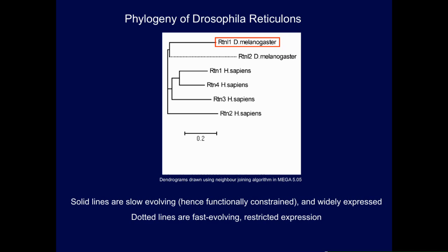The first family we looked at were the reticulons. There are four reticulons in humans and two in flies. We focused on reticulon one because it's widely expressed, whereas reticulon two is limited to testes and fat body. Despite the dendrogram, it's not an ancient duplication — it's a very recent duplication in the Dipteran lineage, and reticulon two only looks ancient because its molecular clock is ticking very fast and it is less constrained functionally. So we focused on the most functionally constrained, most widely expressed reticulon one.